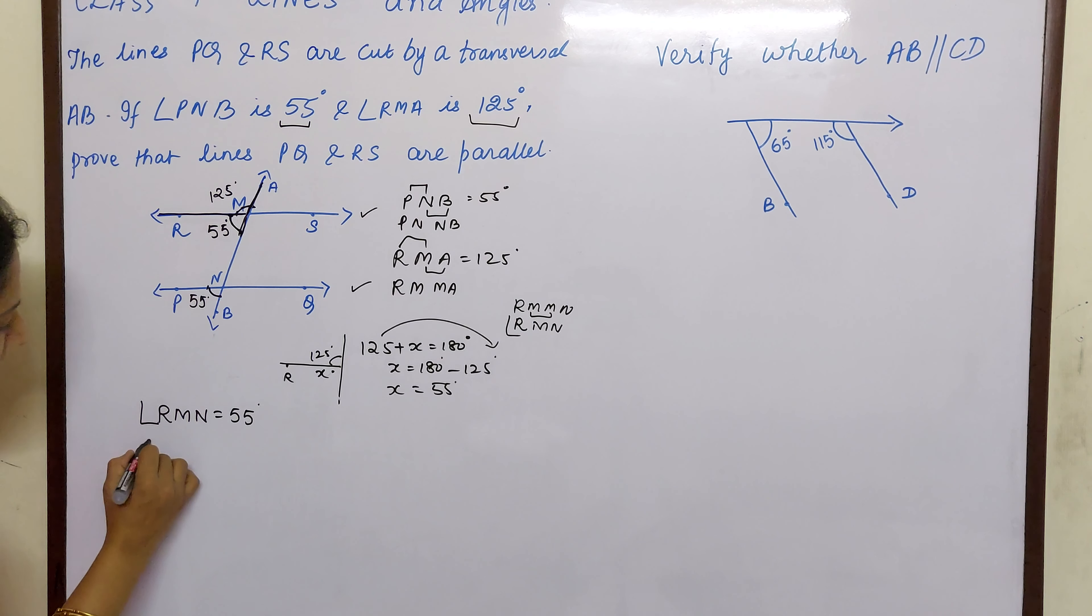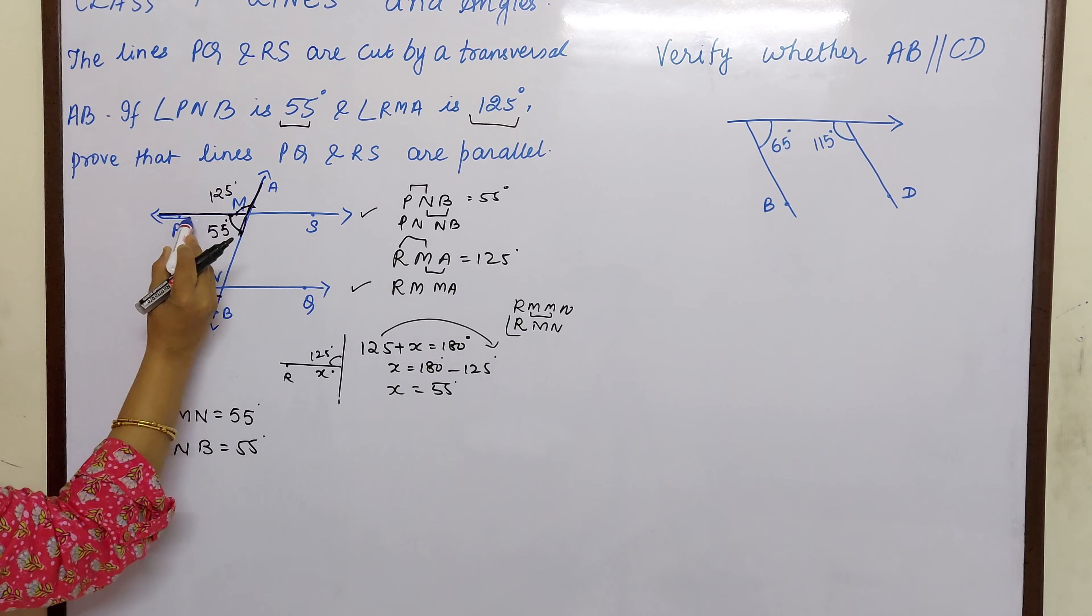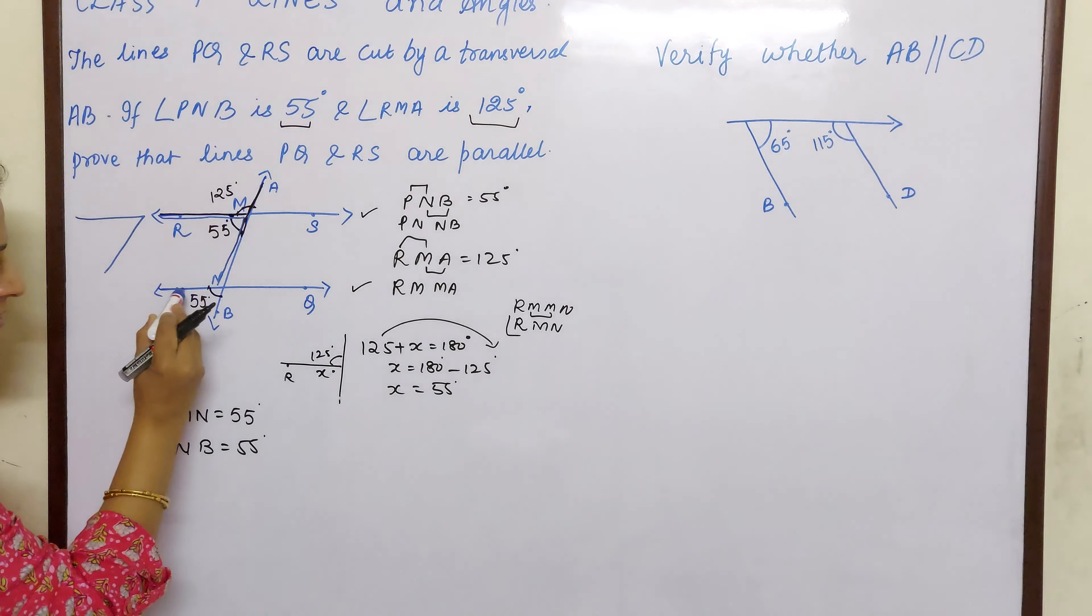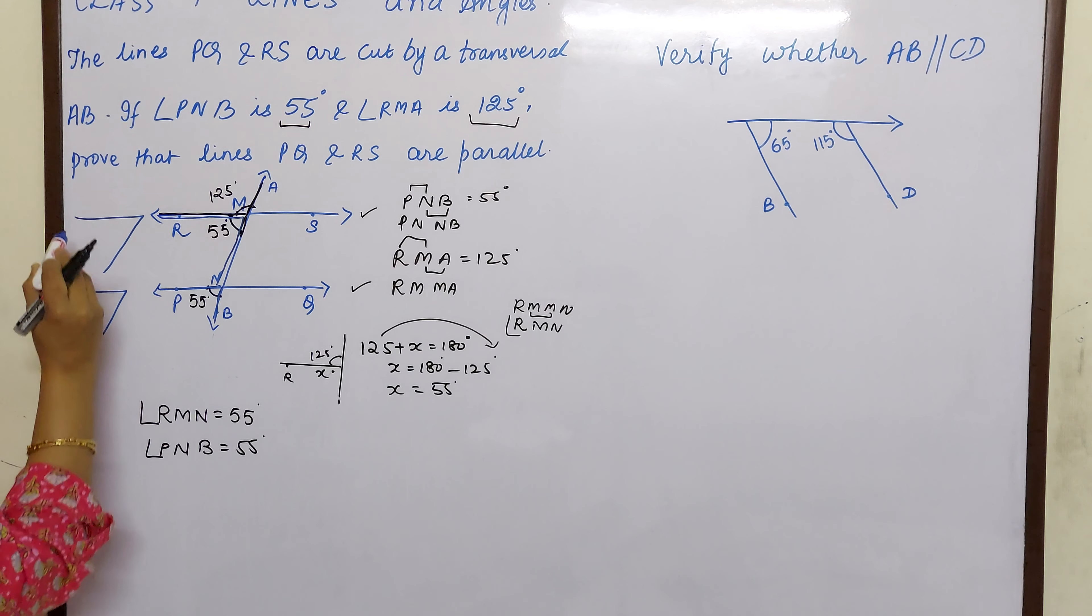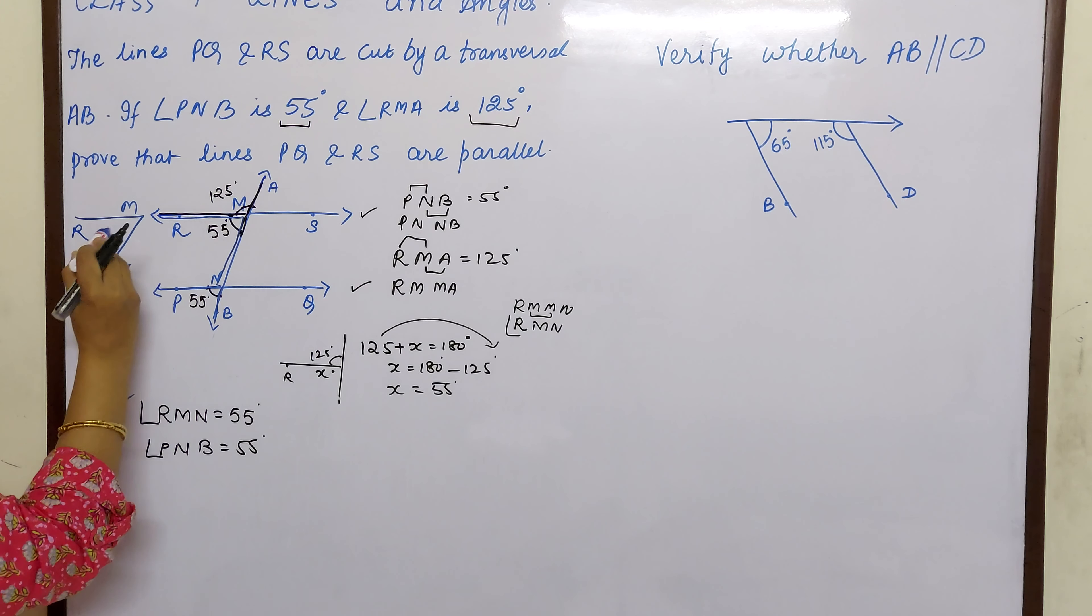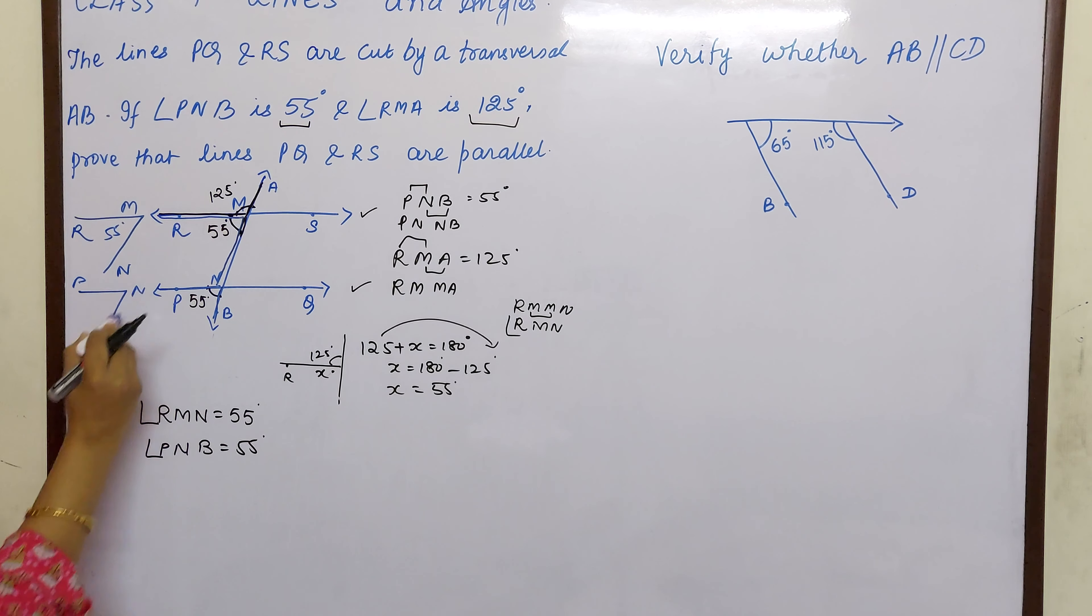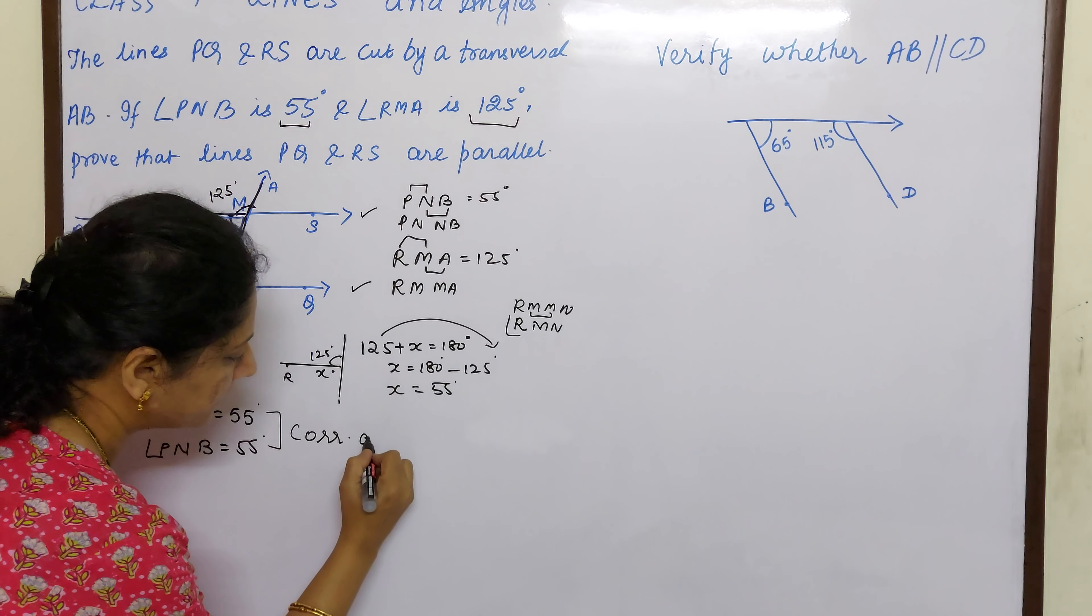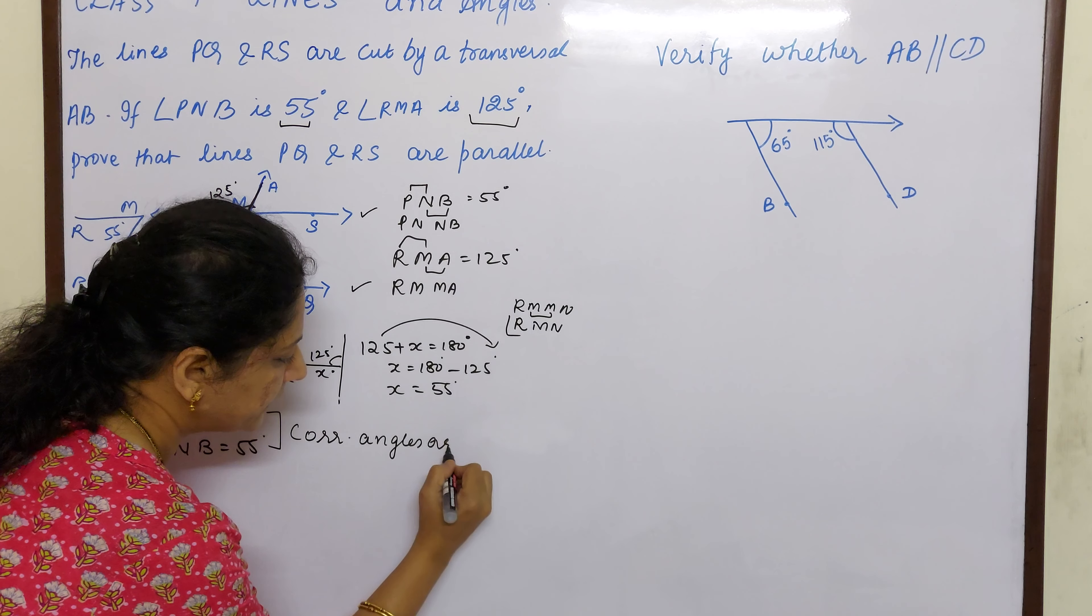And here already they have given us angle PNB is also 55. There is 55 children here, PNB. Now if you look closely children, see this line how they are forming. Straight line coming down. So it is forming like this. This is also straight line coming down. Now only thing is this is R, M, N, 55 degrees. And this is P, N, B which is 55 degrees. Same pattern. So the corresponding angles are equal. Same pattern means corresponding angles are equal. And when are corresponding angles equal children?